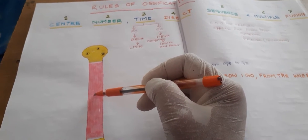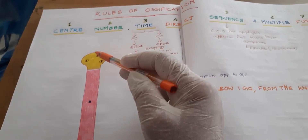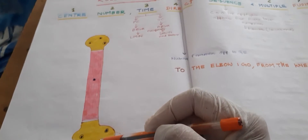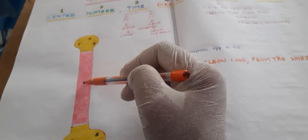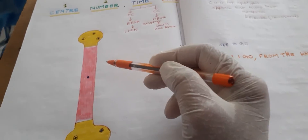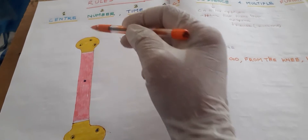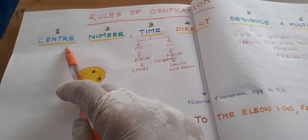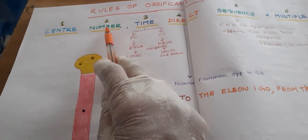The primary center of ossification lies in the diaphysis. Where is the secondary center of ossification? It is in the epiphysis — that is the ends of the long bone. The diaphysis is the shaft of the bone. Ossification starts first from here, and then at the ends. So: primary center of ossification lies in the diaphysis, and the secondary center of ossification lies in the epiphysis. This tells about the center — where the center resides.